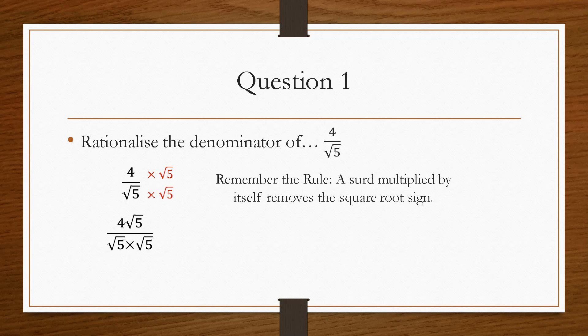We get 4 root 5 over root 5 times root 5. Now, on the bottom, that is the rule that we had to remember. So the square root disappears from the 5. So we're left with 4 root 5 over 5. And that is how you rationalise the denominator.